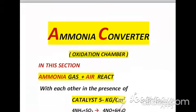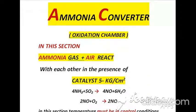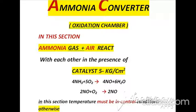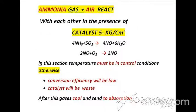The mixture is sent to the ammonia converter section, where ammonia gas and air react with each other in the presence of catalyst. After this reaction we get nitric oxide. In this section, temperature must be in a controlled condition; otherwise, the conversion efficiency will be low and the catalyst will be wasted.